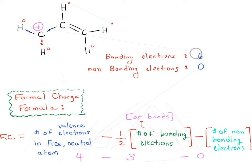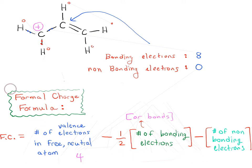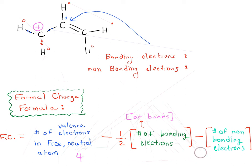Let's move over to the carbon in the middle. This carbon has four bonds, each with two electrons, giving eight bonding electrons and no non-bonding electrons. So: four minus one-half times eight (which is four), minus zero. Four minus four minus zero gives us zero — this carbon is neutral. Another good rule of thumb: if you see four bonds to carbon, it's a neutral species.